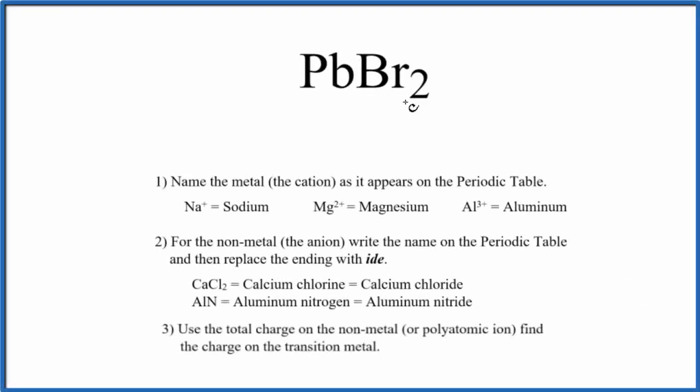To write the name for PbBr2, the first thing we need to realize is that lead, that's a metal, then bromine, that's a nonmetal. Metal and nonmetal, that's an ionic compound.